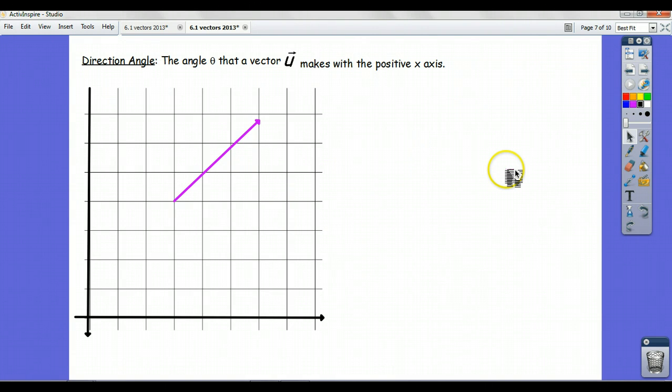We've mentioned that vectors, by definition, indicate magnitude and direction.